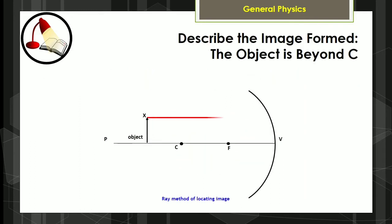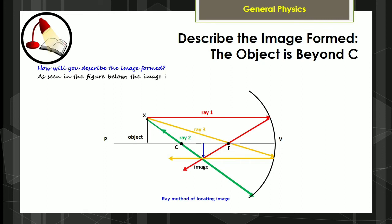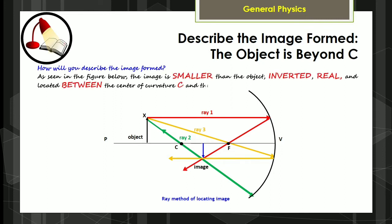Let us describe the image formed if the object is beyond the center of curvature C. As seen in the figure below, the image is smaller than the object, inverted, real, and located between the center of curvature C and the focus F.